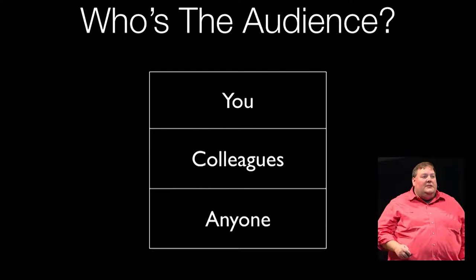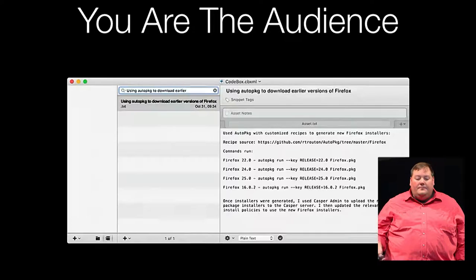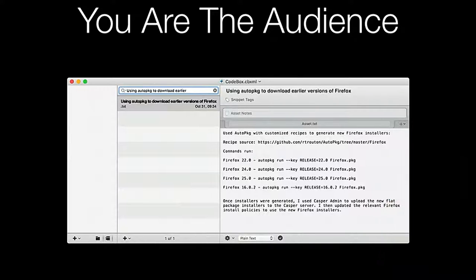Who is the audience for your documentation? It can usually be broken down into three main groups: yourself, your colleagues, and everybody else. The documentation you write for your own use is first and foremost a memory aid. This kind of documentation can take all kinds of forms — notes typed into a notebook app, emails you send to yourself, or information posted to a wiki. In my opinion, this is really the only time you can make assumptions about the knowledge level of the audience — but even then, we all have off days.